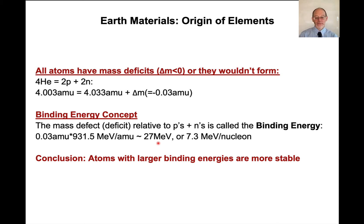And if you figure out, okay, on average, how many mega electron volts is that, how much energy is that, per nucleon, nucleon sum of protons and neutrons, divide by 4, you get 7.3. Now, if you work through all of this and you sort of think about how this all works, what you will conclude is that atoms with larger binding energies are more stable.